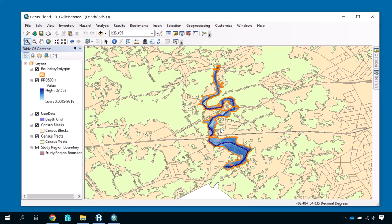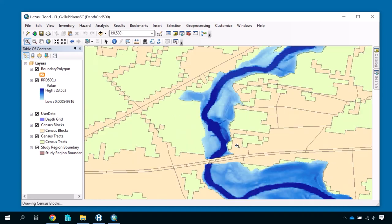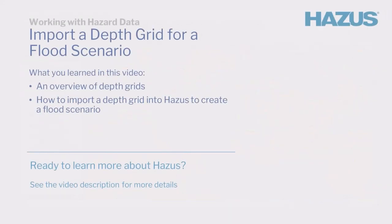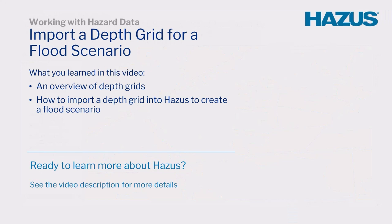The orange outline you see is the inundation boundary. The varying shades of blue represent flood depth, with darker shades signifying deeper water. Congratulations! In this video, you learned about depth grids and how to import a depth grid into Hazus to create a flood scenario. Look for more Hazus video tutorials on the FEMA YouTube channel.